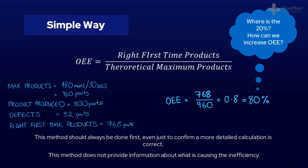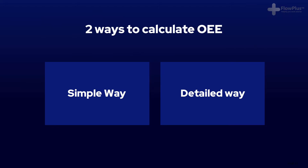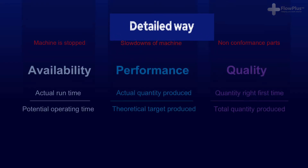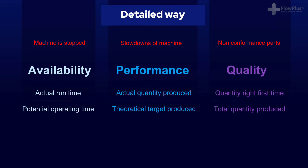That is where the more detailed calculation comes in. The detailed calculation splits the OEE into three distinct categories: availability, performance, and quality. The three categories are then multiplied together to get the OEE value.